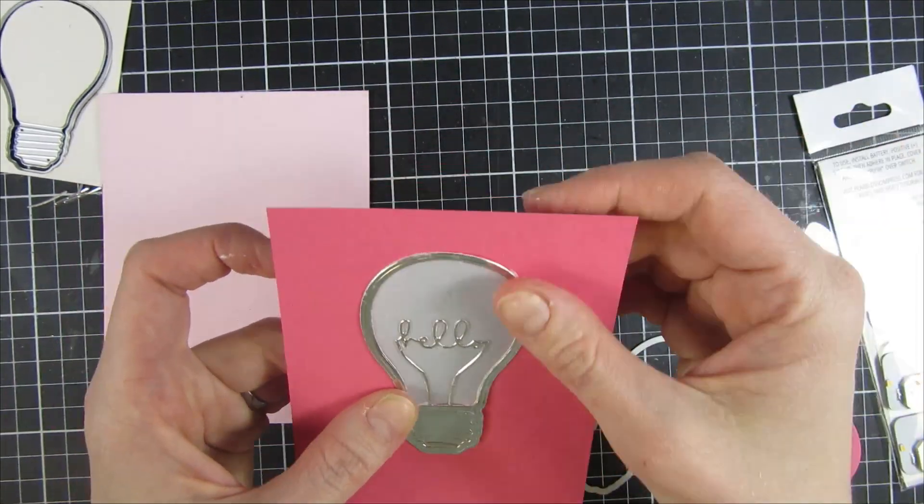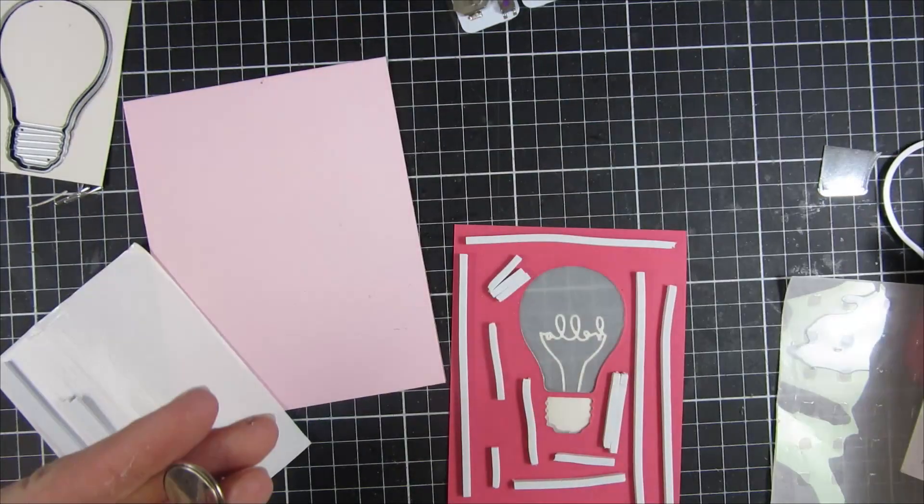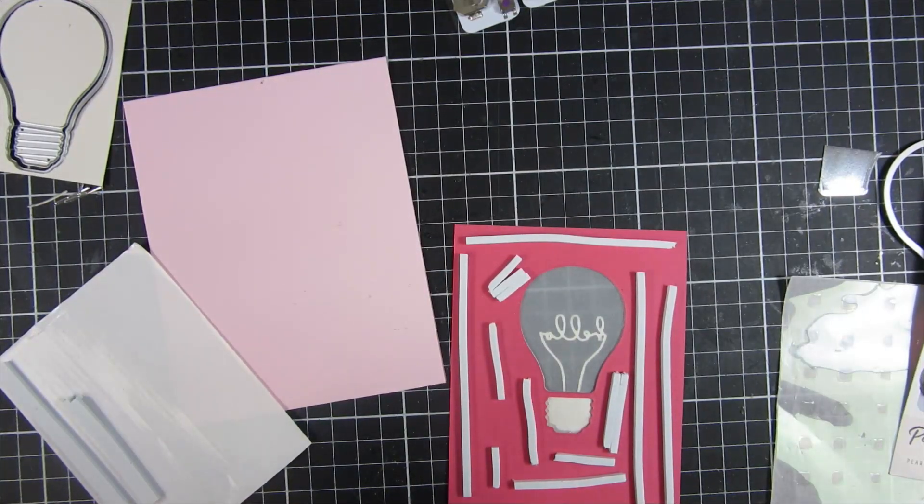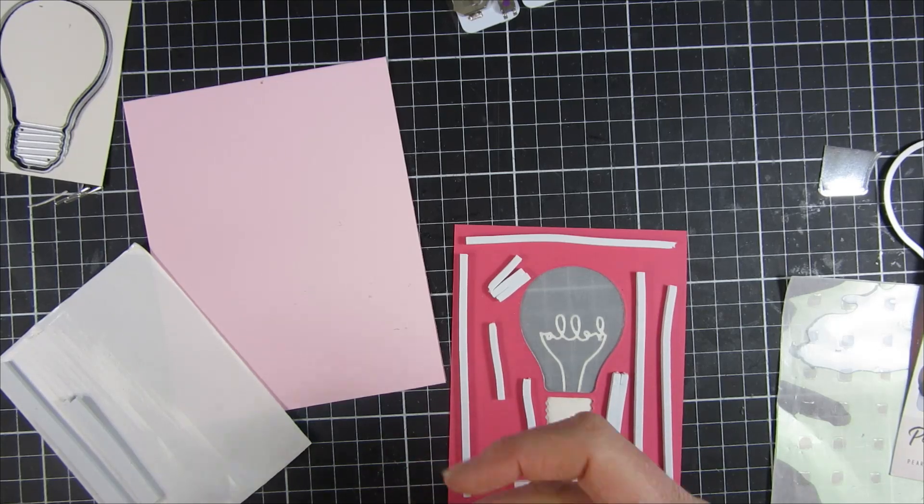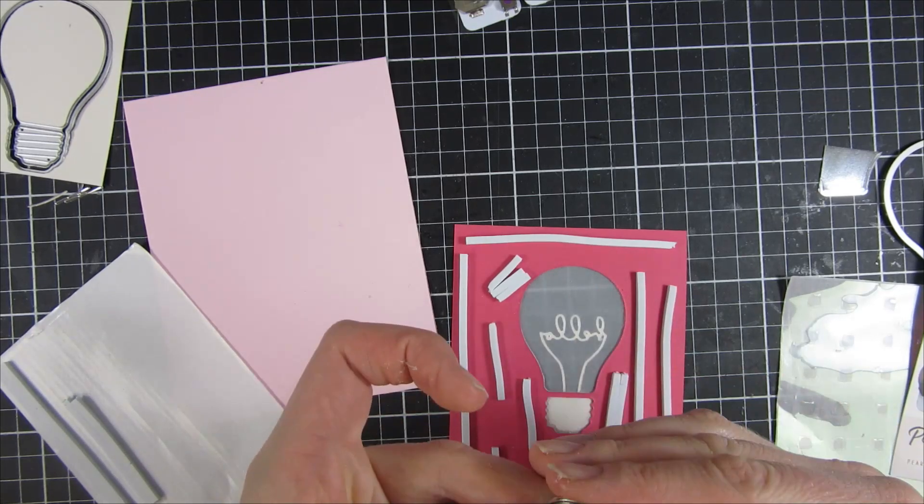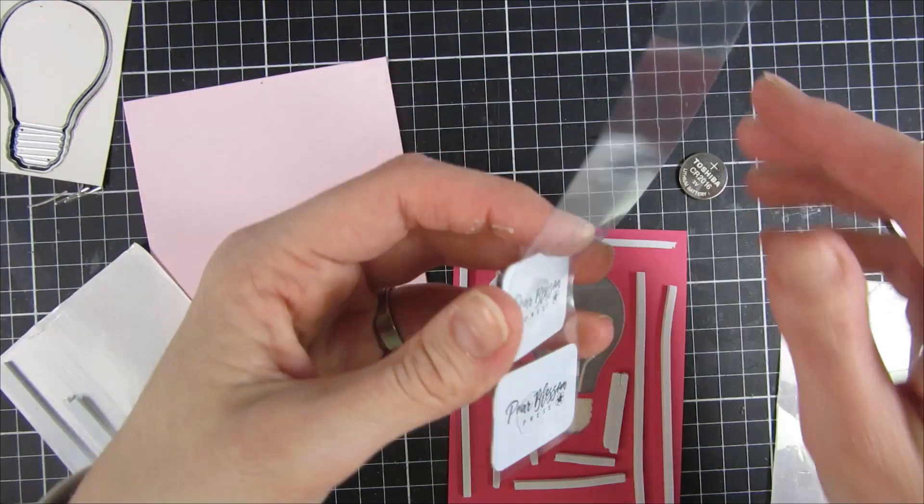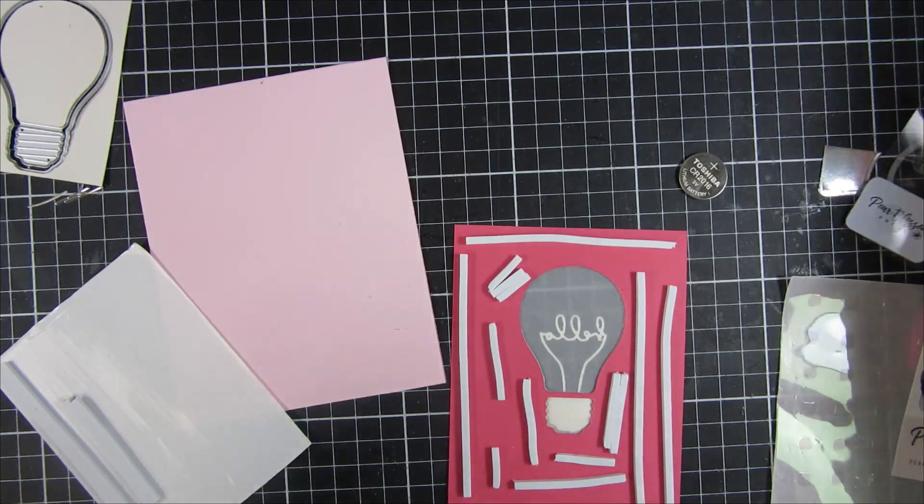I will raise all of this up with some foam strips from Trinity, and I also have one of these One Lights from Pearl Blossom Press. I just love these when I'm creating light-up cards. This is the only one I've actually been using because it's super easy to use and figure out how to attach everything.